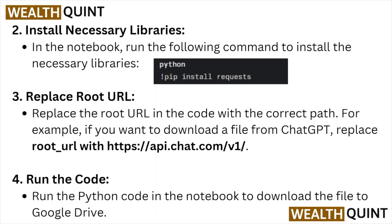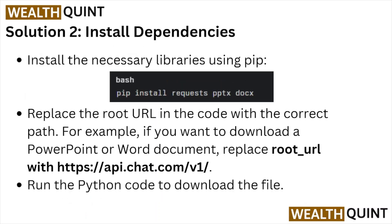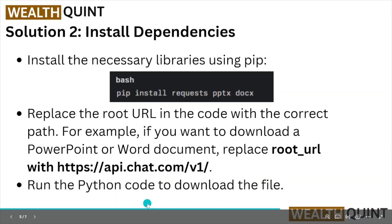Solution number two: install dependencies. Install the necessary libraries using pip — run pip install requests, pip install python-pptx, and pip install python-docx. Replace the root URL in the code with the correct path, for example if you want to download a PowerPoint or Word document. Then run the Python code to download the file.